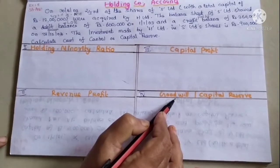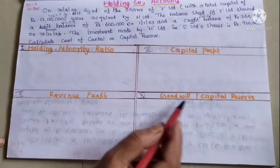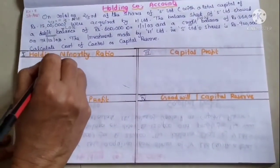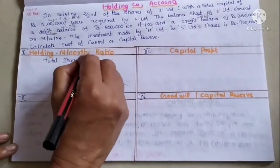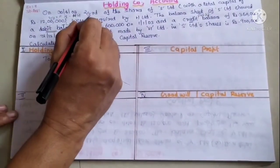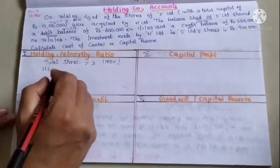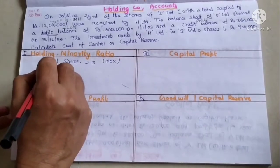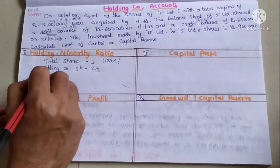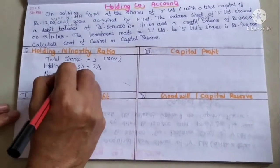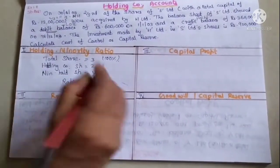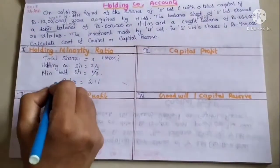Total shares are 100%. Holding company has two-thirds shares, and minority holders have one-third shares. So the holding to minority ratio is two-thirds to one-third.